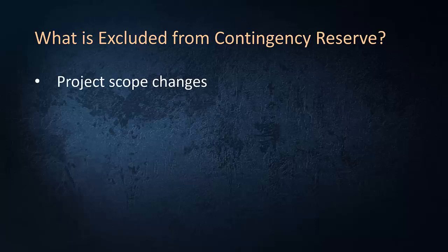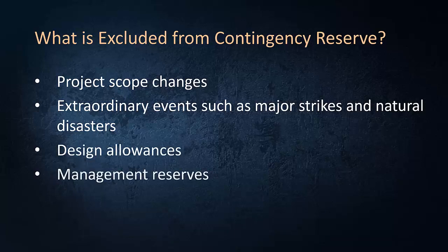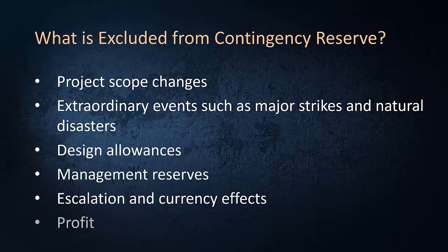Cost contingency doesn't include project scope changes — those should be managed through the change management system, not through the contingency reserve. Contingency also doesn't include unexpected extraordinary events, such as natural disaster or labor strike. Other items including design allowances, management reserve, escalation, and profit are also excluded from the cost contingency.